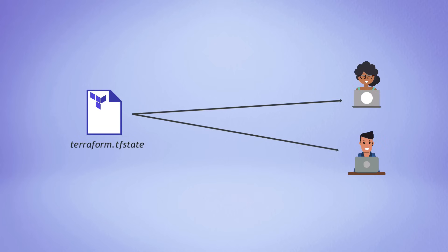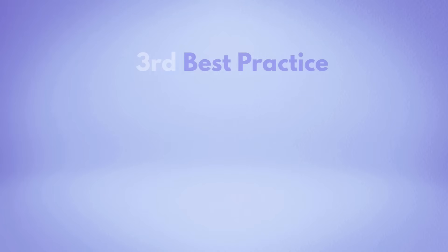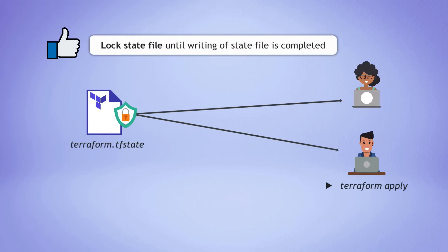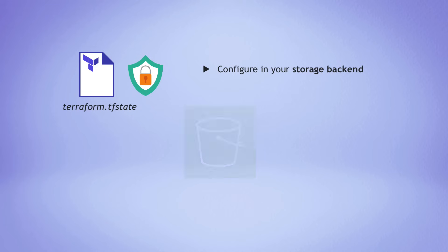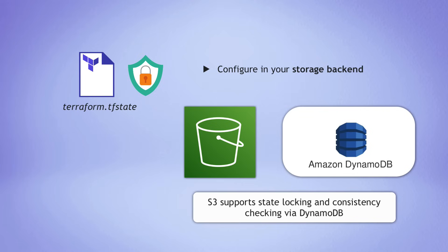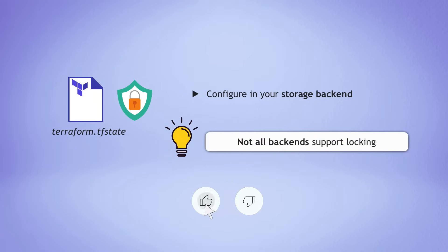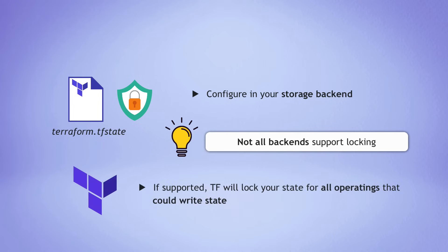But what if two team members execute Terraform commands at the same time? What happens to the state file when you have concurrent changes? You might get a conflict or mess up your state file. To avoid changing Terraform state at the same time, the next best practice is locking the state file until an update is fully completed, then unlock it for the next command. This way you can prevent concurrent edits to your state file. In practice, this is configured in your storage backend — in S3, for example, DynamoDB is automatically used for state file locking. Note that not all storage backends support this, so be aware of that when choosing remote storage. If supported, Terraform will lock your state file automatically.